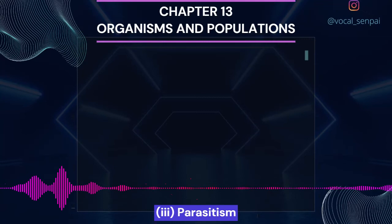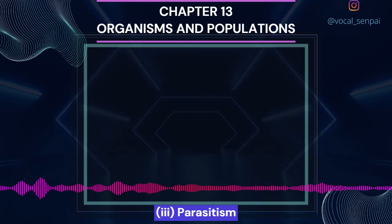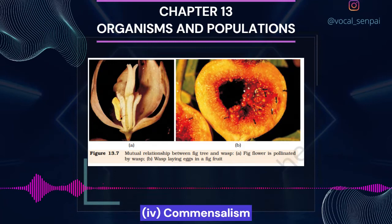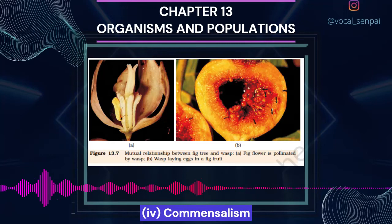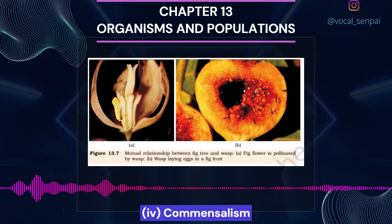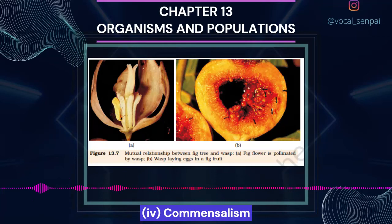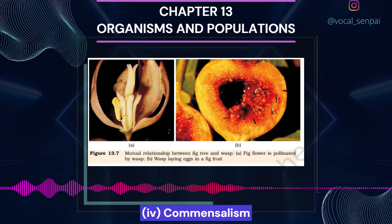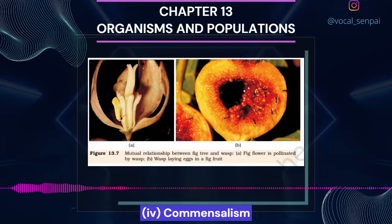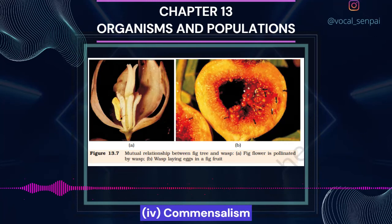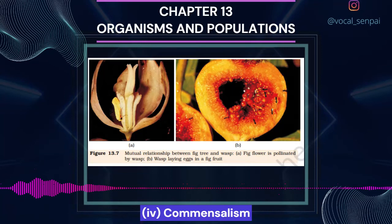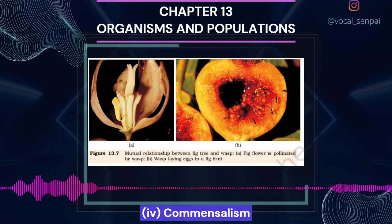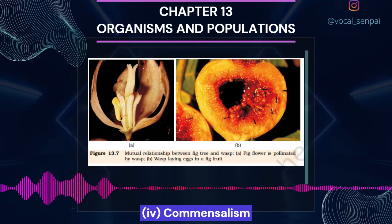Commensalism is the interaction in which one species benefits and the other is neither harmed nor benefited. An orchid growing as an epiphyte on a mango branch benefits while the mango tree derives no apparent benefit. The cattle egret and grazing cattle is a classic example — egrets forage close to cattle because cattle stir up and flush out insects that would otherwise be difficult for egrets to find. Another example is the sea anemone with stinging tentacles and the clownfish living among them: the fish gets protection from predators while the anemone does not appear to derive any benefit.